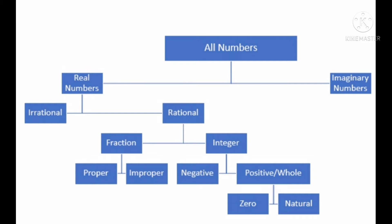Fraction is also divided into two ways: proper fraction and improper fraction. And integers are divided into two ways: negative integers and positive integers. And positive integers are divided into two ways: zero and natural numbers.